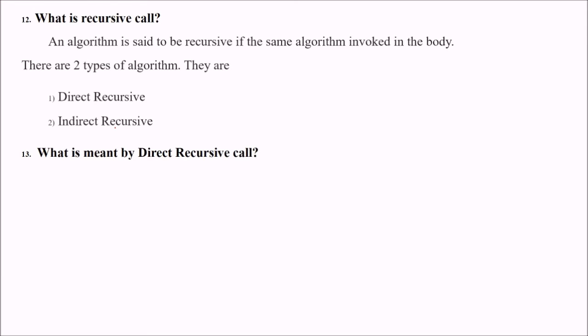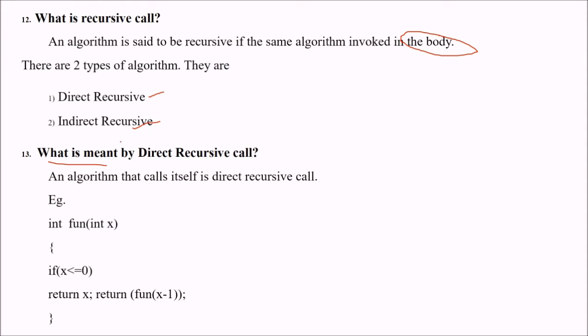What is recursive call calling itself? Algorithm is said to be recursive if the same algorithm is involved by itself, by the body itself. There are two types of recursive algorithms, direct and indirect. What is direct? An algorithm that calls itself is a direct recursive call. For example, this is a function and it is calling itself.